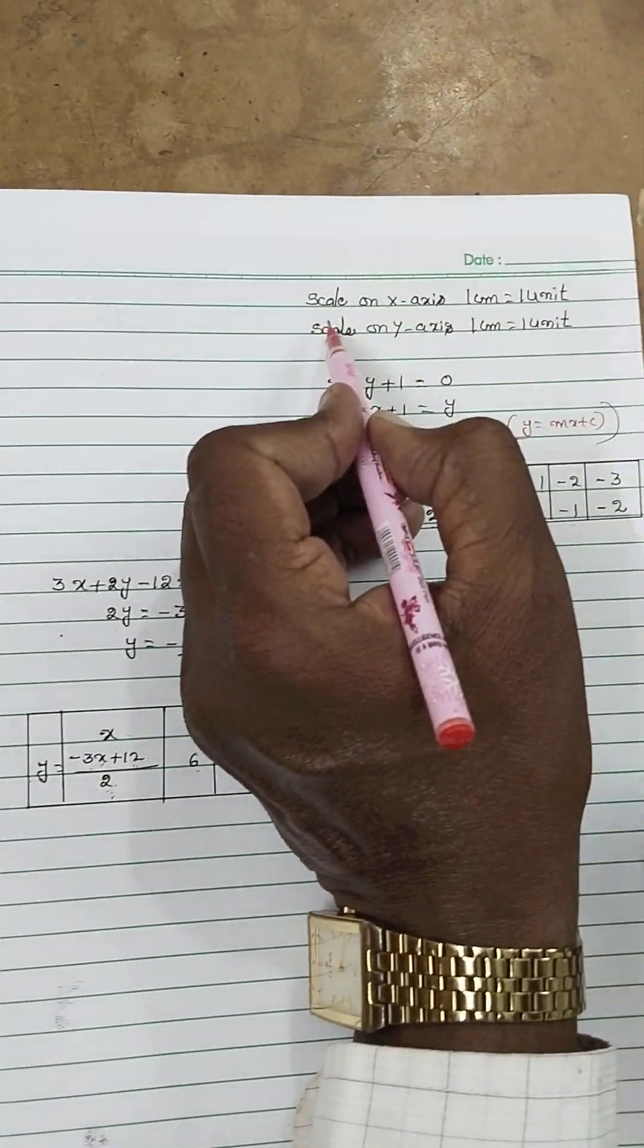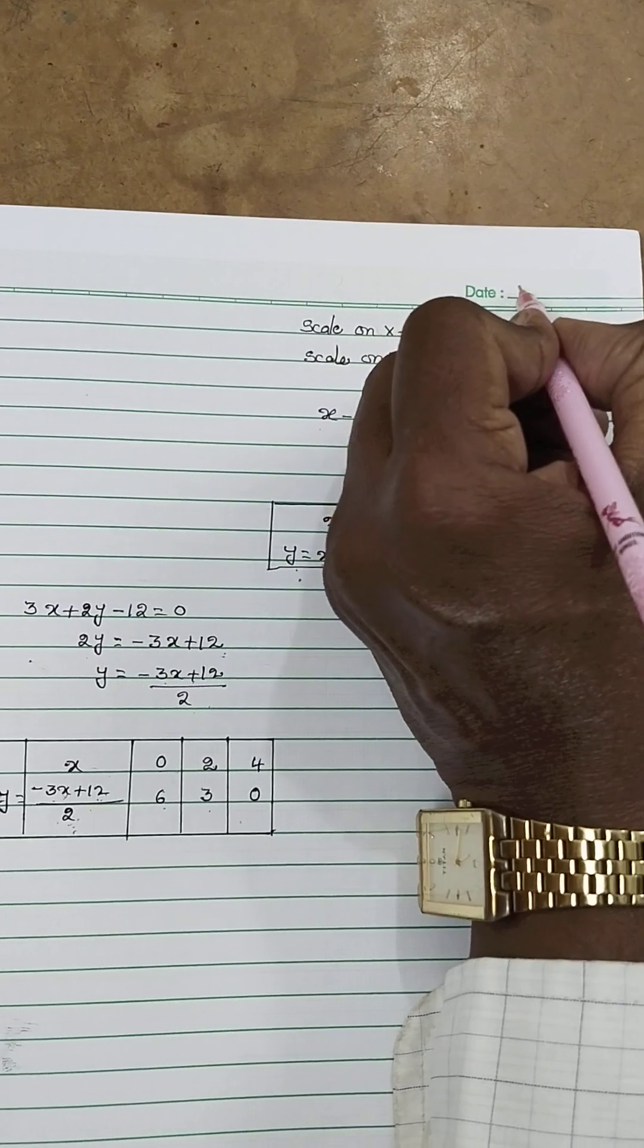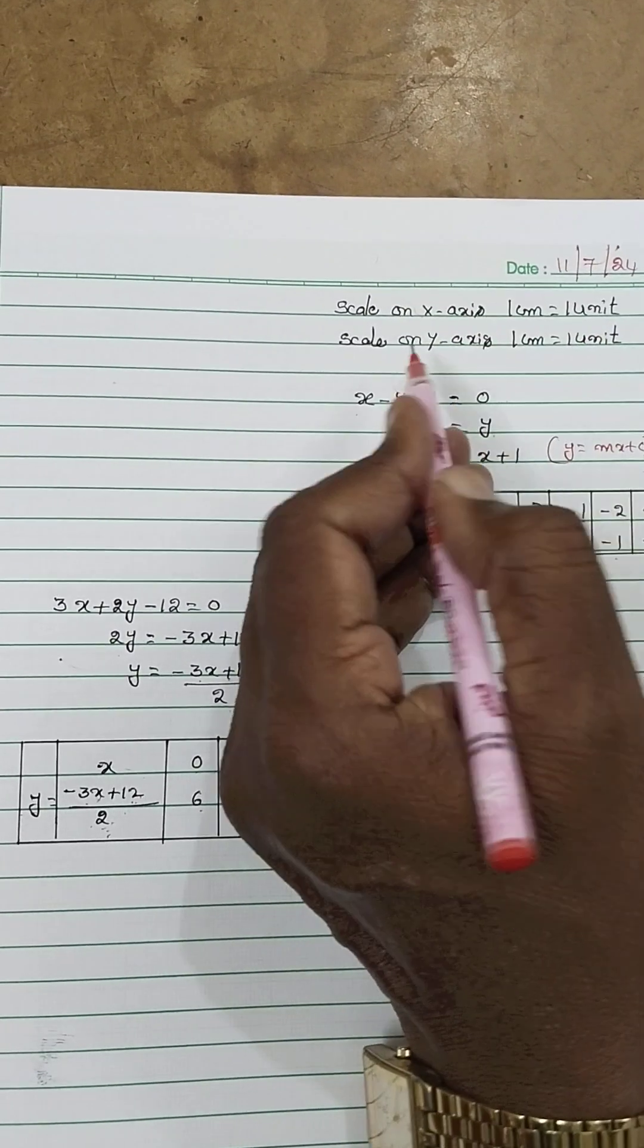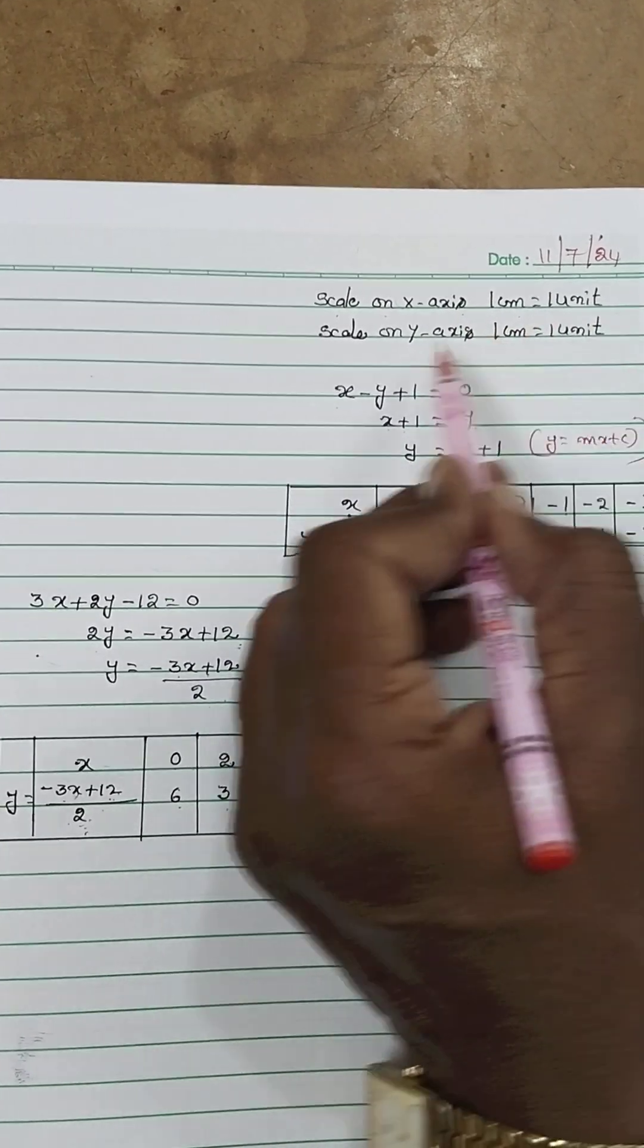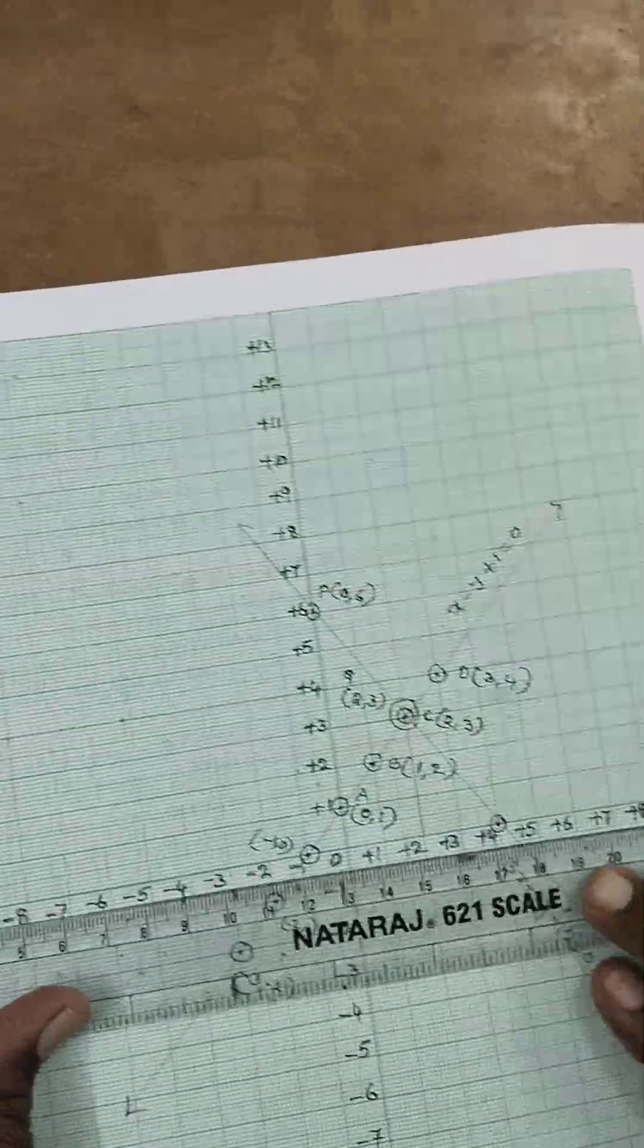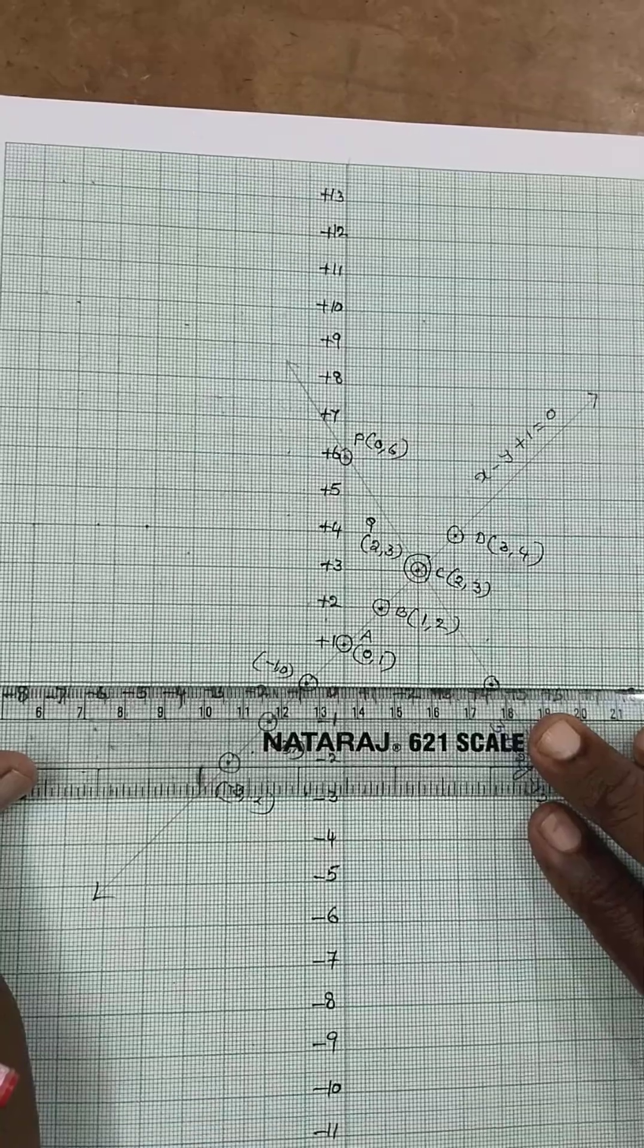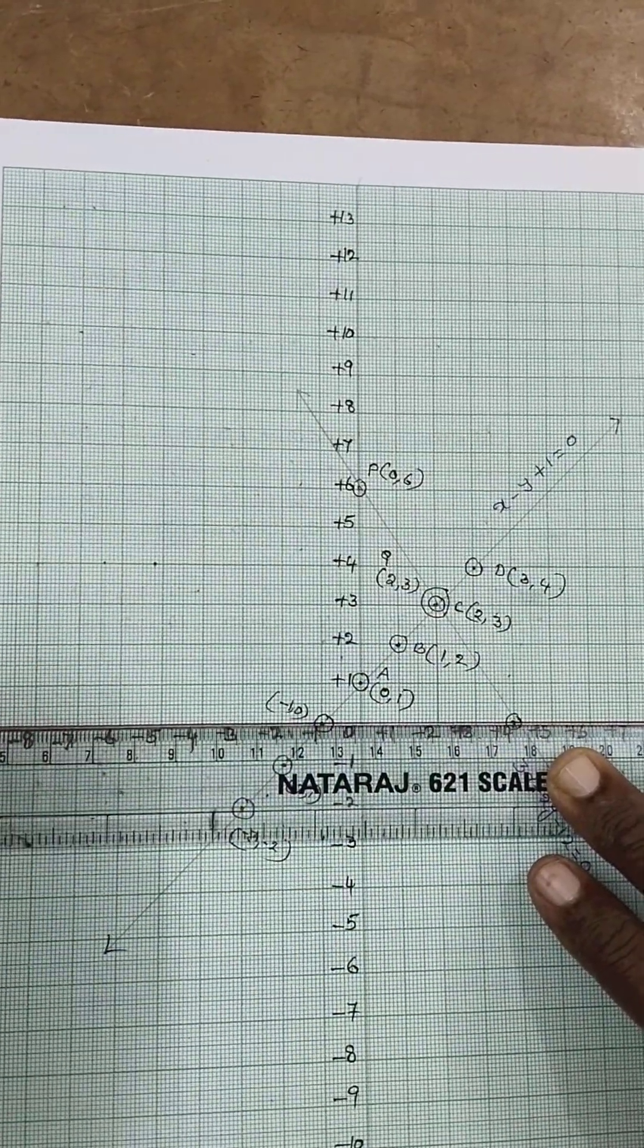Before you draw the graph, you write the scale on graph sheet. First, today is the date 11th 7th 24. Scale on x-axis 1 cm is equal to 1 unit. Scale on y-axis 1 cm is equal to 1 unit. So I draw the first x-axis here. I am drawing again with a pen. Already I wrote in pencil.